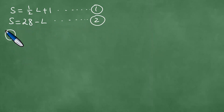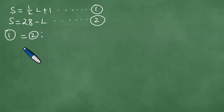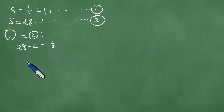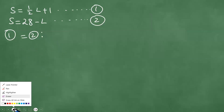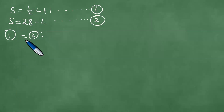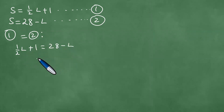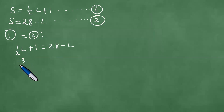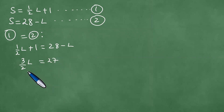We can equate Equation 1 to Equation 2 because they are both equal to S, so we have ½L + 1 = 28 minus L. That gives us ½L + L, which is 1½ or 3/2 L, equals 27. Dividing by 3 and multiplying by 2 gives L = 18.